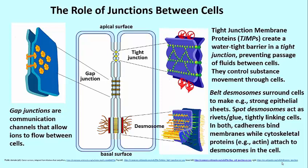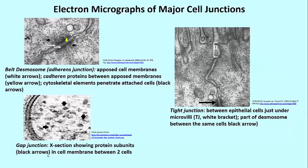Finally, the gap junction is really less a junction than a communication channel, and it allows ion flow between cells.